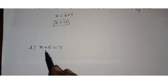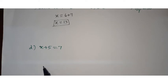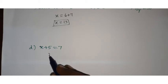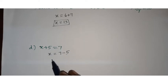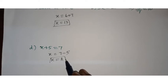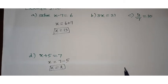Second example: x plus 5 equals 7. Directly we can say 2 plus 5 is 7, so x equals 2. Formally, the plus 5 goes to the other side as minus 5, so x equals 7 minus 5, which is 2. Any addition term goes that side as minus; any minus term goes that side as plus.